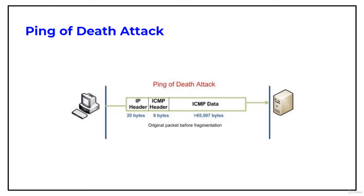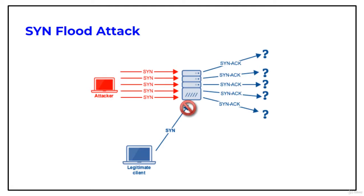The size of the packet exceeds the size limit prescribed by RFC 791 IP, which is 65,535 bytes. Therefore, the packet the attacker is sending is 3 bytes more, and the reassembly process by the receiving system might cause the system to crash.